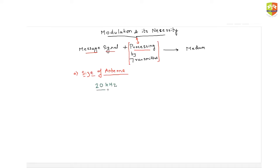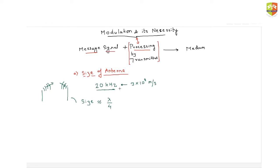This 20 kilohertz signal is an electromagnetic signal which travels at the speed of light — 3×10⁸ meters per second. There is a transmitter antenna that transmits the signal and a receiver antenna that receives it. The size of the receiver antenna is of the order of λ/4. Now, if you have a 20 kilohertz message signal, what is its wavelength?